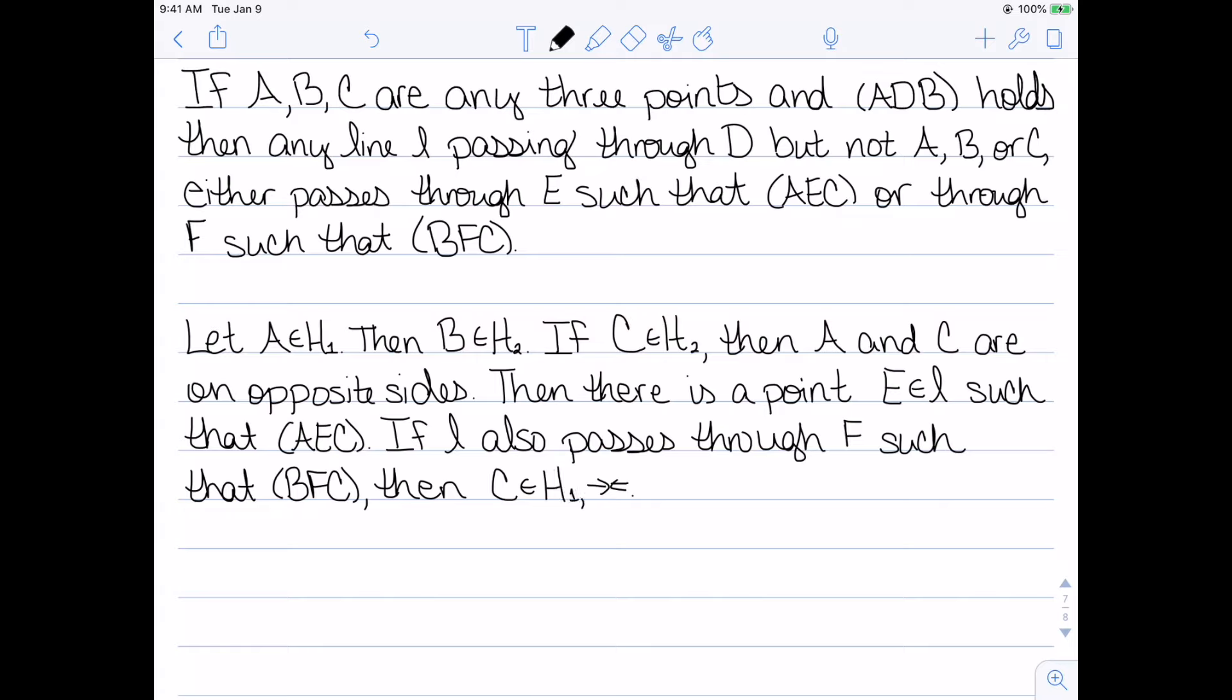I now want to show they're mutually exclusive. So if my line L also passes through a point F such that B, F, C, then since my last theorem was an if and only if, I know that C has to be on the opposite side of B. So I need C to be in H1, which is a contradiction. I did assume that C was in H2, but if you assume C is in H1, you can get a very similar argument to this. So therefore we have to have that one of these two conditions hold and they are mutually exclusive. Only one of them holds.